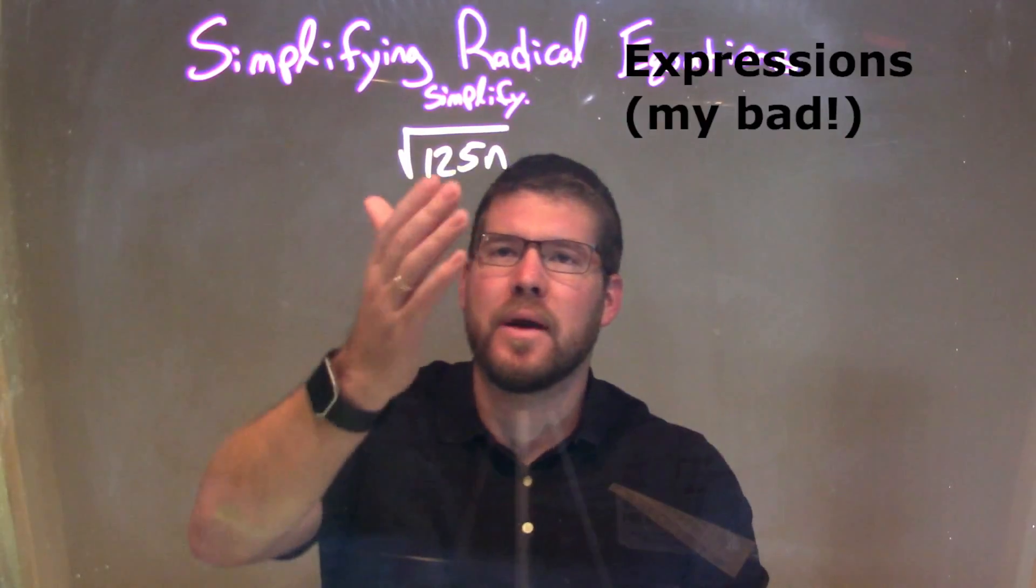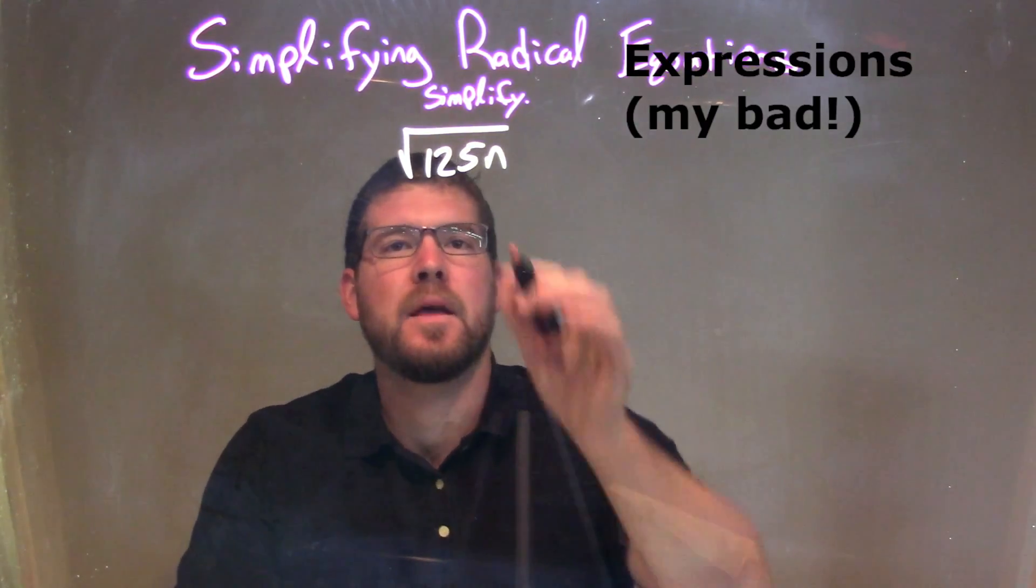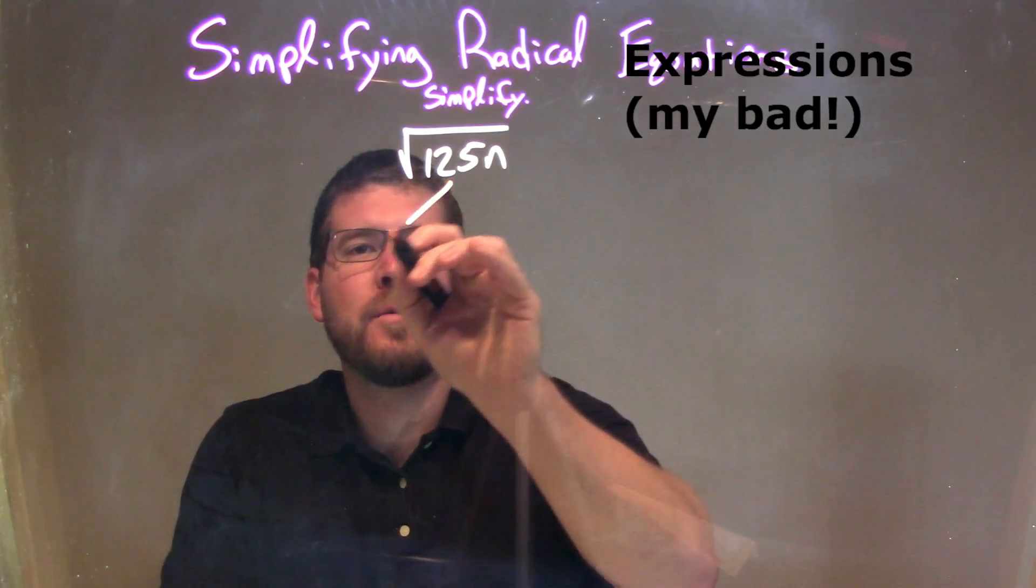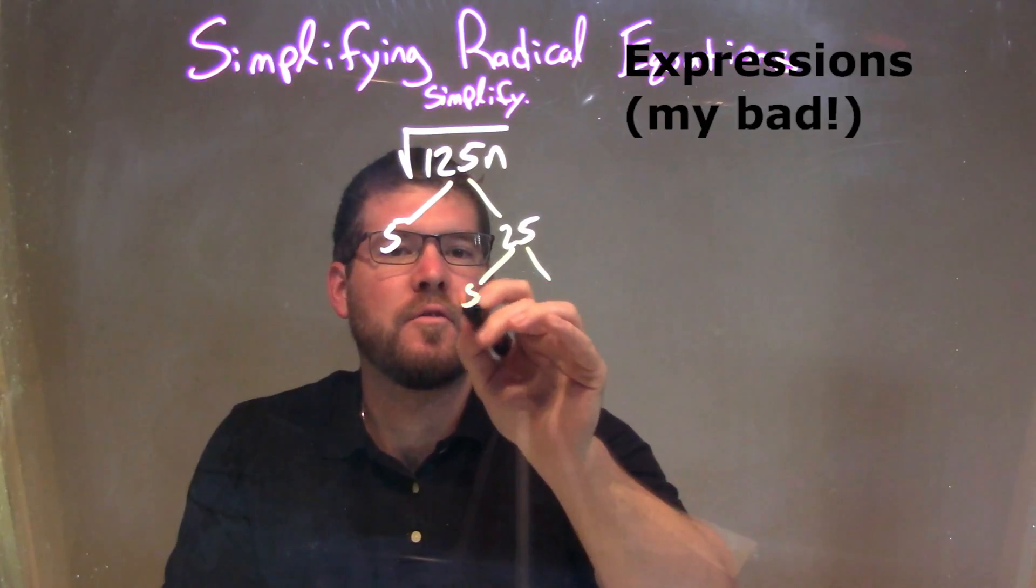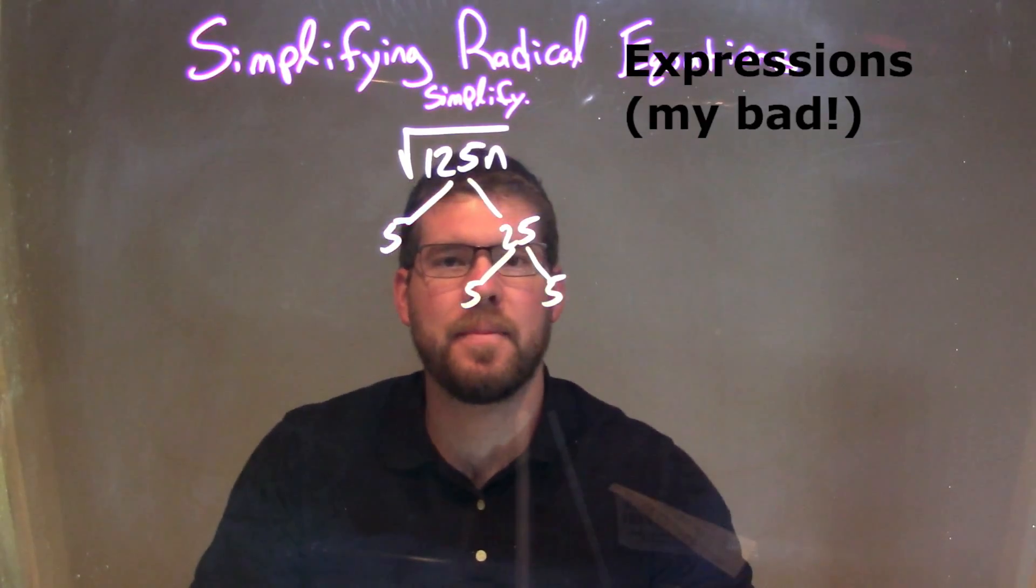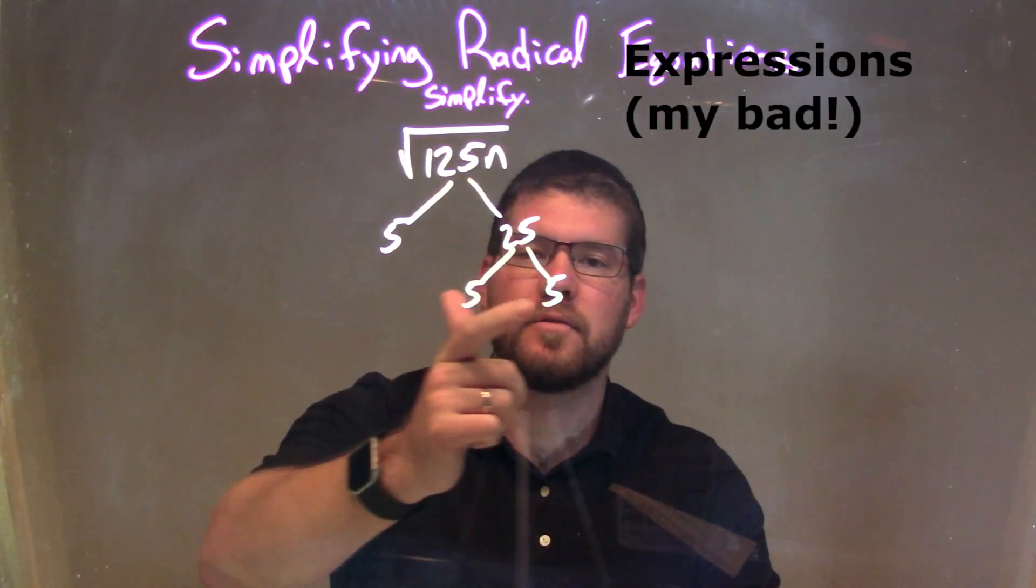So what I like to do is see if I can break down my prime factorization of 125, that number itself. So 125 I know is 5 and 25, and 25 breaks down to be 5 and 5. So really 125 is 5 times 5 times 5.